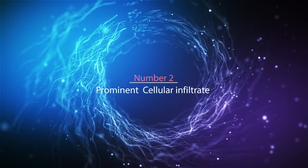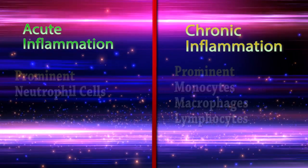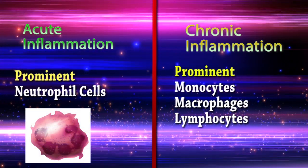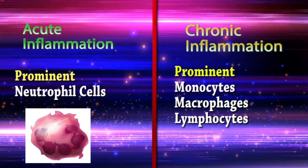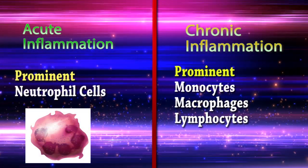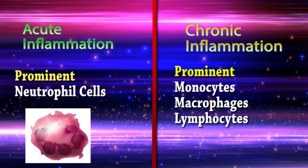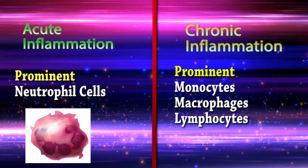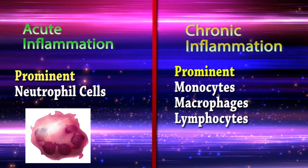Difference number two: prominent cellular infiltrate. In acute inflammation we can see prominently neutrophil cells, and in chronic inflammation we can prominently see monocytes, macrophages, and lymphocytes.